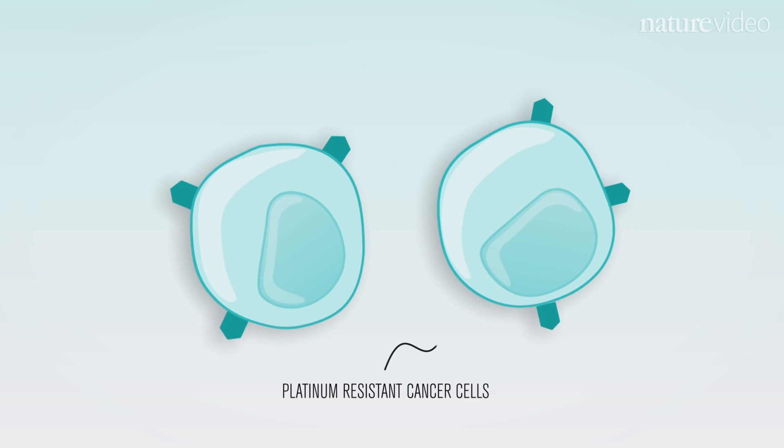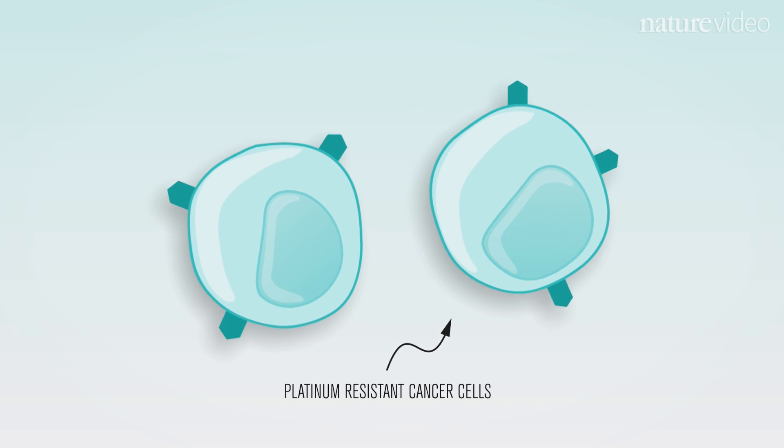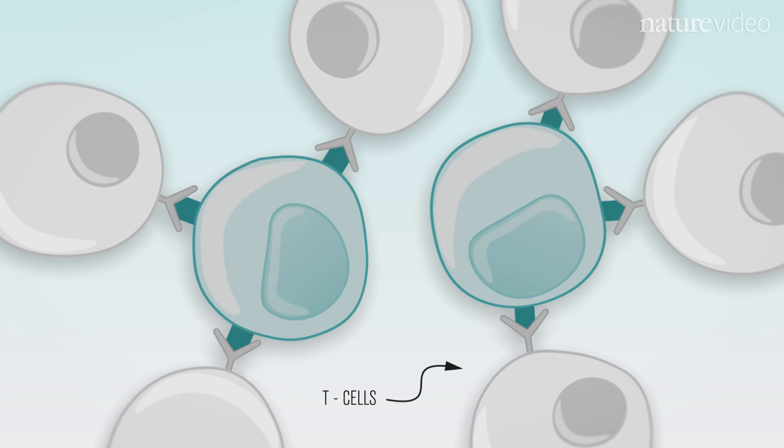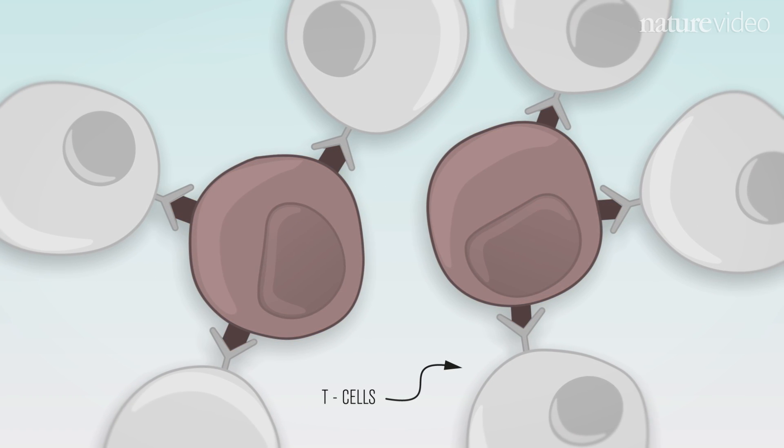Researchers also hope to recalibrate the immune system to overcome platinum resistance. Vaccine trials are already underway, aimed at priming immune cells to recognize and attack cancer cells.